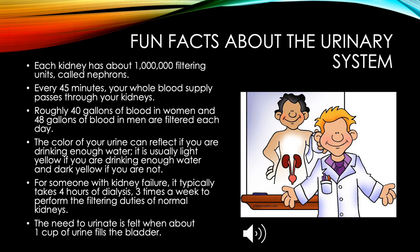Fun facts about the urinary system: Each kidney has about one million filtering units called nephrons. Every 45 minutes, your whole blood supply passes through your kidneys. Roughly 40 gallons of blood in women and 48 gallons in men are filtered each day. The color of your urine reflects hydration — light yellow when well-hydrated, dark yellow when not. For someone with kidney failure, it typically takes four hours of dialysis three times a week to perform the filtering duties of normal kidneys. The need to urinate is felt when about one cup of urine fills the bladder.